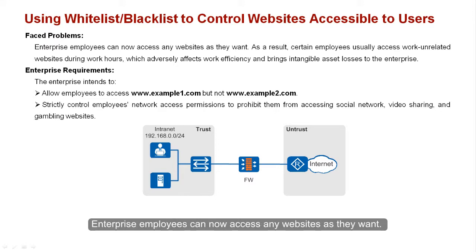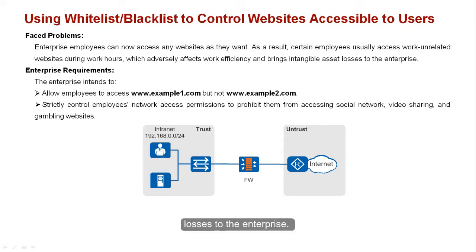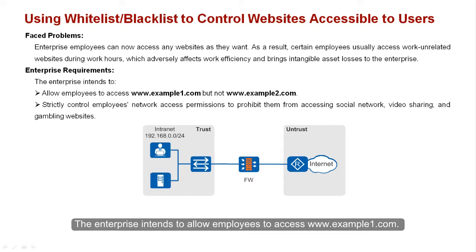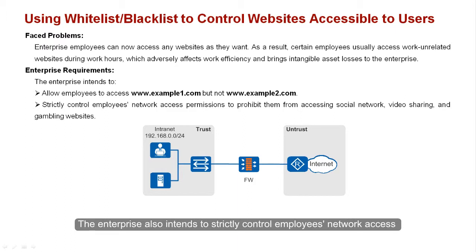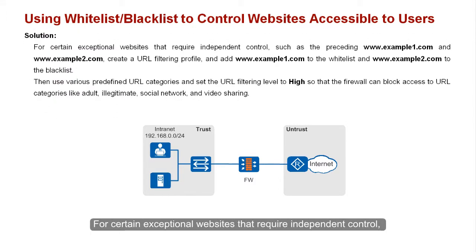Now let's look at an example. Enterprise employees can currently access any websites they want. As a result, certain employees access work-unrelated websites during work hours, which adversely affects work efficiency and brings intangible asset losses to the enterprise. The enterprise intends to allow employees to access www.example1.com, prohibit access to www.example2.com, and strictly control access permissions to prohibit social network, video sharing, and gambling websites.